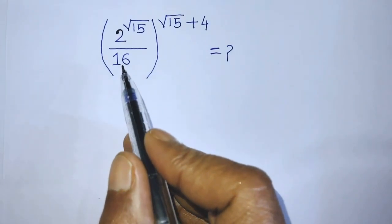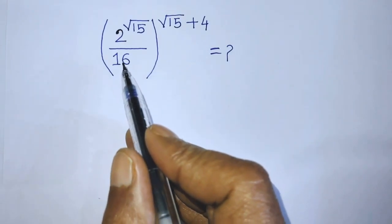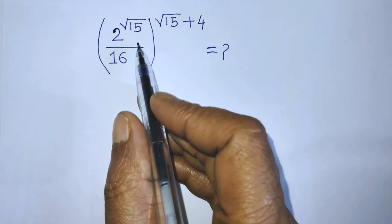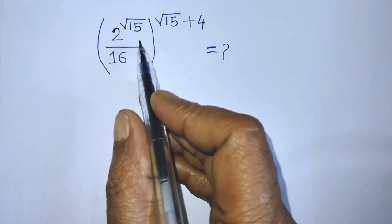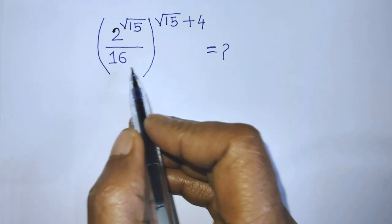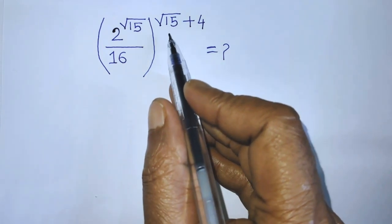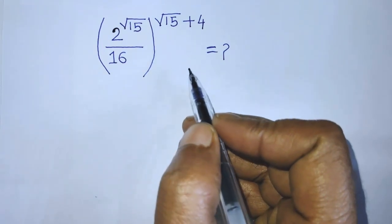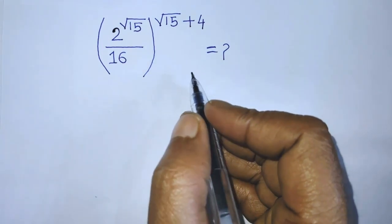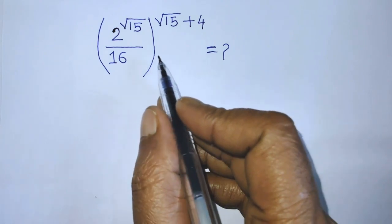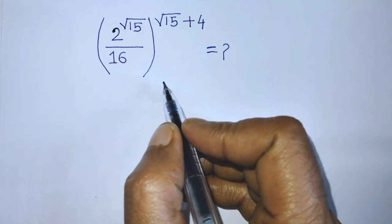Hi guys, you are welcome to solve this math problem, which is 2 to the power the square root of 15 over 16, whole to the power the square root of 15 plus 4. Today in this video, I am telling you how to simplify this algebraic expression.